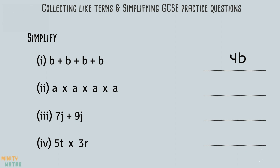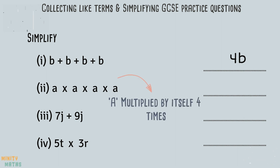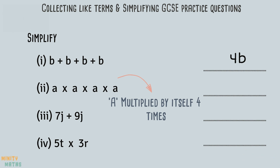The second question asks us to simplify a multiplied by itself four times. When we multiply a term by itself we can use indices to show this in a simpler form. As we are multiplying a by itself four times, we can simply write a to the power of four.